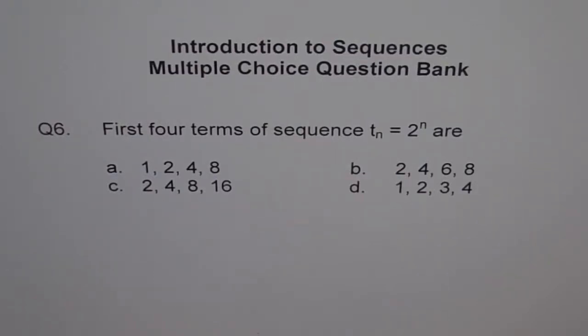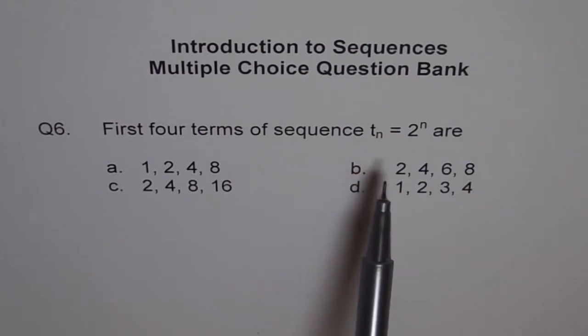Question number 6 of Introduction to Sequences. It's a multiple choice question and the question says first four terms of the sequence TN equals 2 to the power of N are